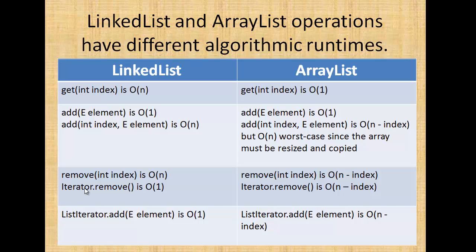Remove is O(1) if you are using an iterator — in that case it is also O(1). But in ArrayList, remove is O(n minus index), and the iterator remove method is also O(n minus index). List iterator add is O(1), and in ArrayList, list iterator add is O(n minus index). Now let's get started with Eclipse and see an operation.